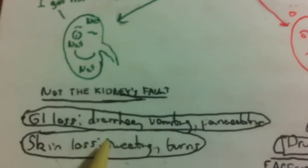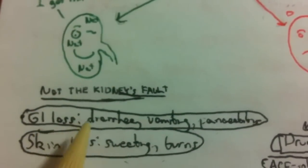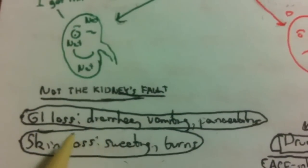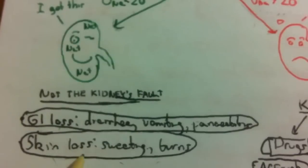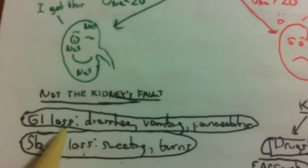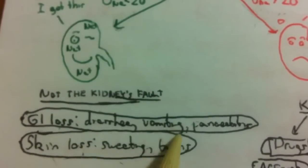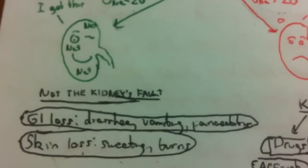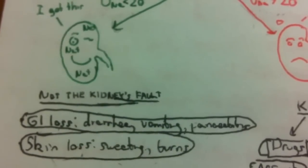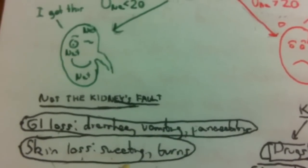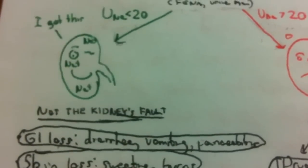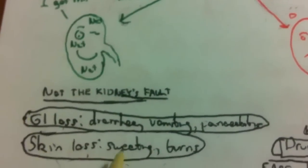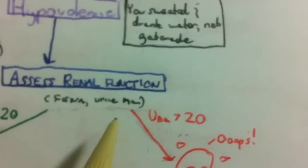So in that case it tells you that the reason your patient is hyponatremic is probably from GI or skin loss. Examples include diarrhea, vomiting, pancreatitis for GI losses, and sweating or burns for skin losses.